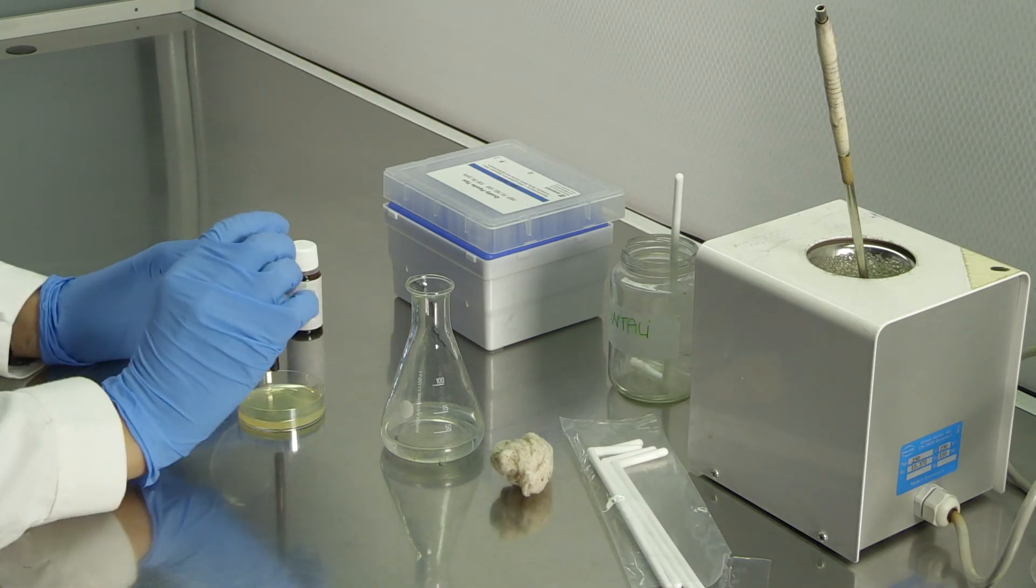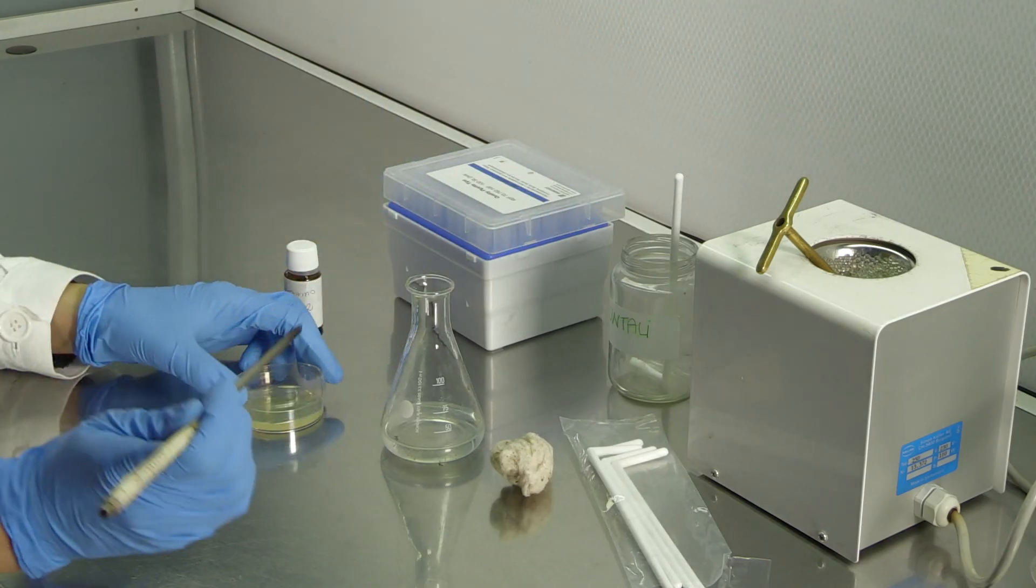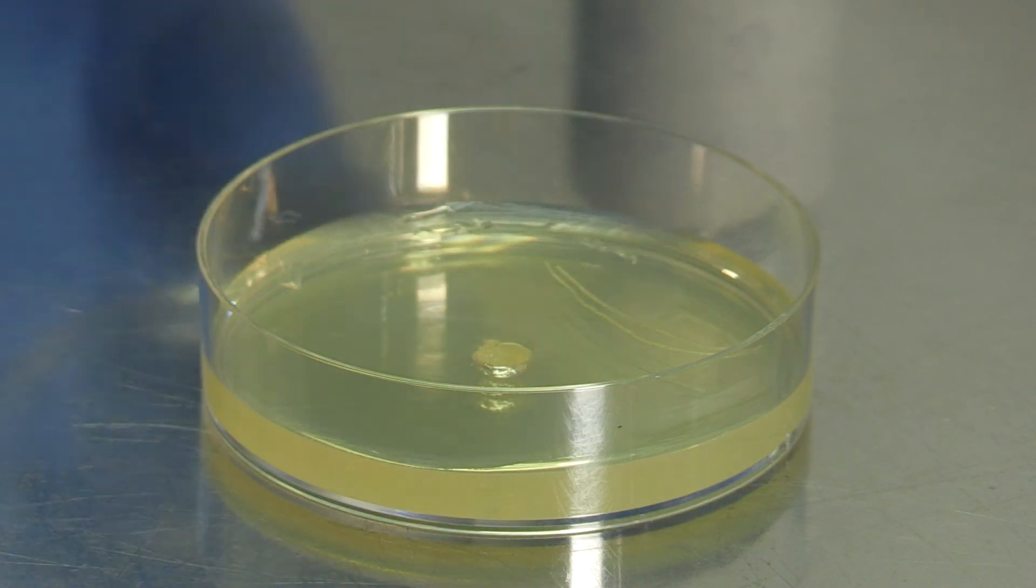With the help of a sterile cork borer, the agar surface is drilled and a small piece of agar is removed, obtaining a central well.